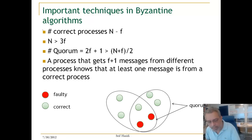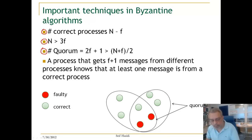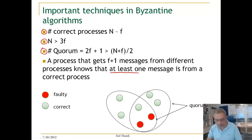In a Byzantine quorum, we have the number of correct processes are n minus f, where n is the total number of processes and f is the maximum number of faulty processes. We also have the condition that n is greater than 3f, and the size of a quorum is 2f plus 1, which is greater than half of the sum of all processes plus faulty processes. A property that gets f plus 1 messages from different processes knows that at least one message is from a correct process.